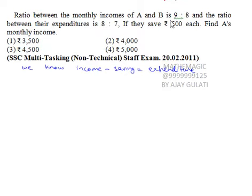Ratio between the monthly income of A and B is 9 is to 8, and the ratio between their expenditures is 8 is to 7. If they save Rs. 500 each, find A's monthly income.